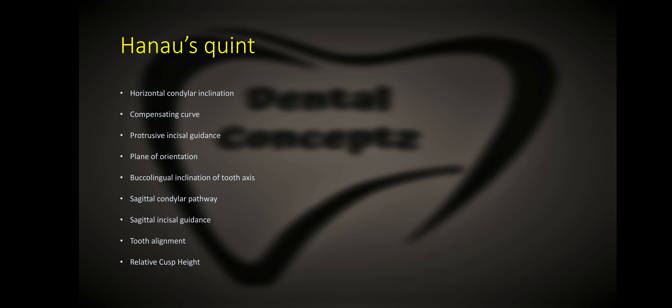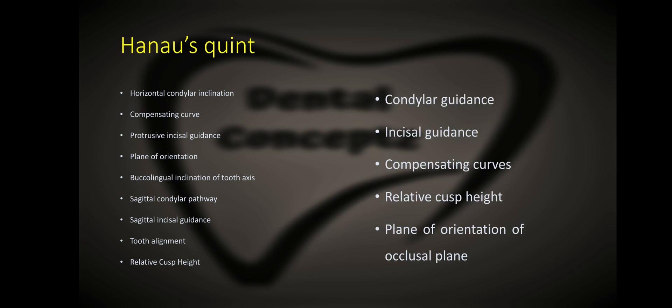What is Hanau quint? Hanau quint consists of factors considered in balanced occlusion. Originally, nine factors were given by Hanau, including horizontal condylar inclination, compensating curve, protrusive incisal guidance, plane of orientation, buccolingual inclination of tooth axis, sagittal condylar pathway, sagittal incisal guidance, tooth alignment, and relative cusp height. Later it was modified into five factors: condylar guidance, incisal guidance, compensating curves, relative cusp height, and plane of orientation of the occlusal plane.